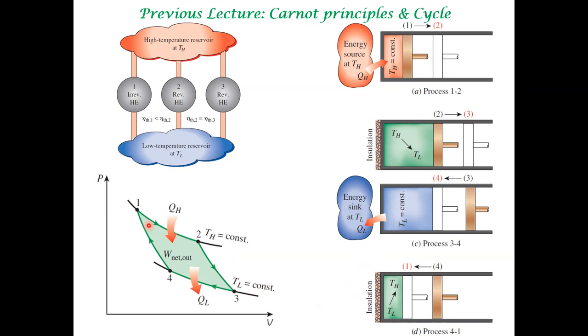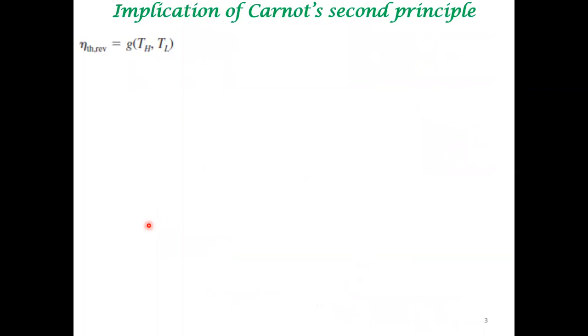This is what we covered and the consequences of this kind of representation of a cycle was also discussed in the last lecture. So, what is the implication of Carnot's second principle? The central implication is that the efficiency of a reversible heat engine is just a function of TH and TL, the high temperature reservoir temperature and temperature of the low temperature reservoir.